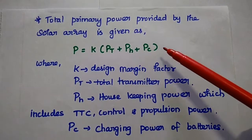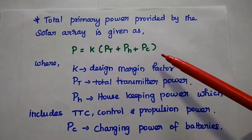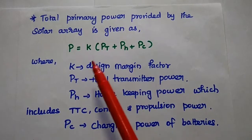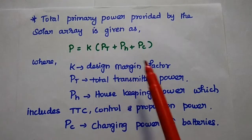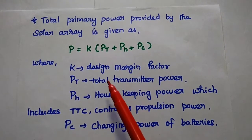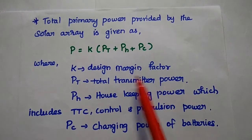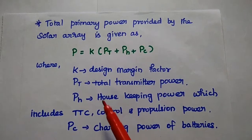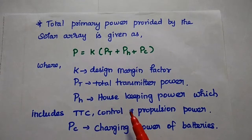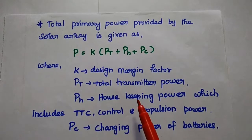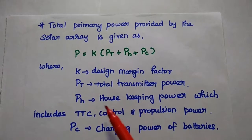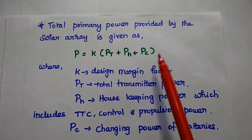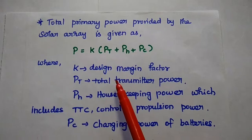The total primary power provided by the solar array is given as: P = K × (PT + PH + PC). Here, K is the design margin factor, which is a constant. PT is the total transmitter power. PH is the housekeeping power, which includes telemetry, tracking, command system, and control propulsion power system. PC is the charging power of batteries. These together form the combination of total power.